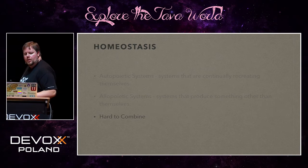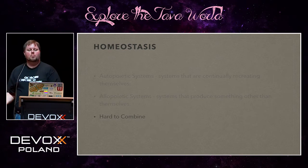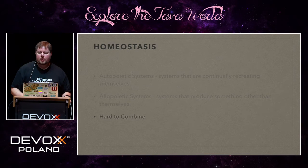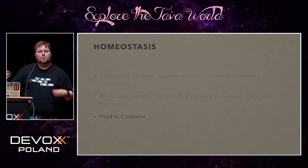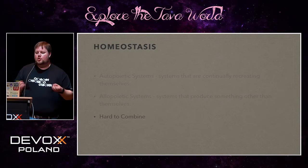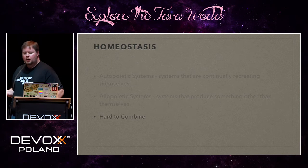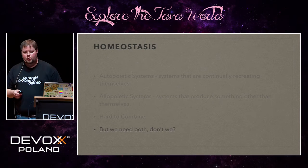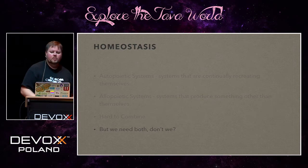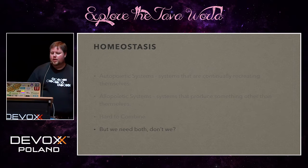Writing autopoietic code in our current programming languages is going to be very hard to understand because they're not designed to think about that sort of problem. But because we need both, we probably need additional tools — languages, frameworks, platforms — that help us do that.